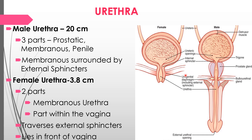In females, the urethra is very short, approximately 3.8 centimeters. It has only two parts: the membranous part and the part within the vagina. It passes through the external sphincter, and the urethra lies in front of the vagina.